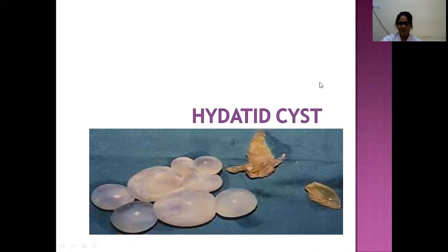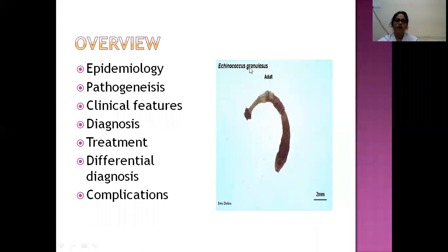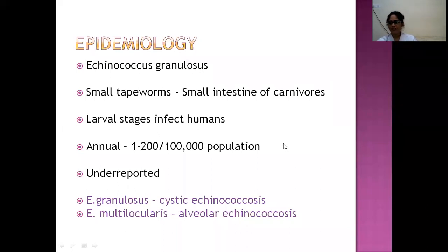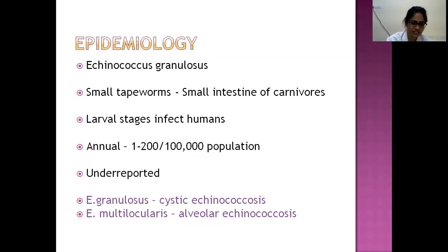Hydatid cysts will also be covered under surgery, so I won't talk much about it. Hydatid cysts are caused by the larval stage of the dog tapeworm, Echinococcus granulosus. These are smaller tapeworms inhabiting the small intestine of carnivores whose larval stages can accidentally infect humans and cause hydatid disease. The incidence is 1–200 per 100,000 population, and WHO estimates about 1 million infections per year — largely under-reported because the disease is prevalent in rural pasture areas.